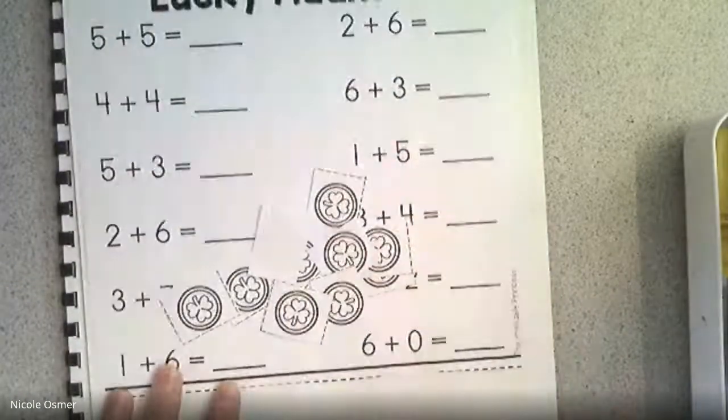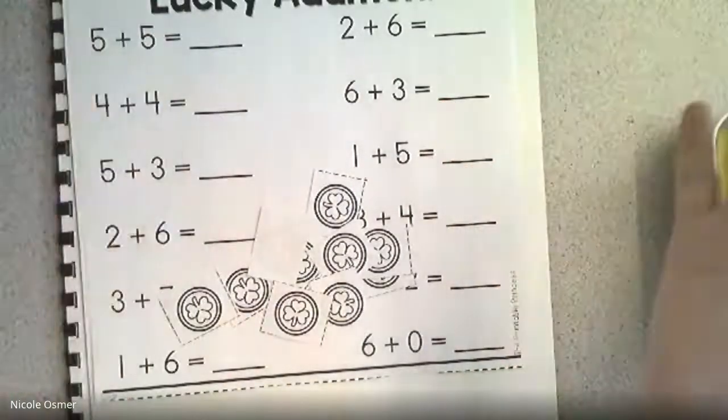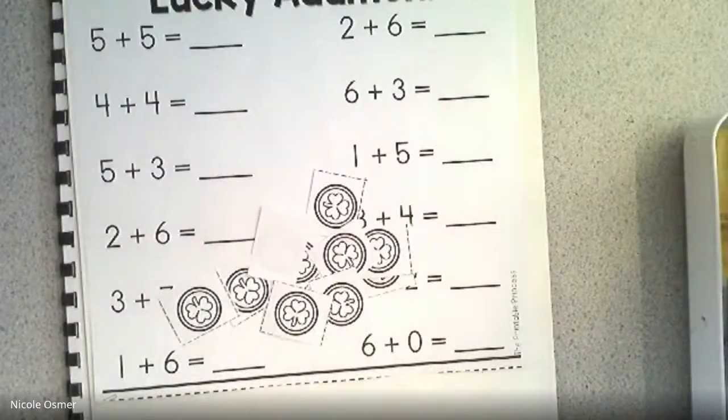So the first one, some of you might not even need the coins. You might say, oh, I know five and five. Five and five, we clap it together. How much? Ten.